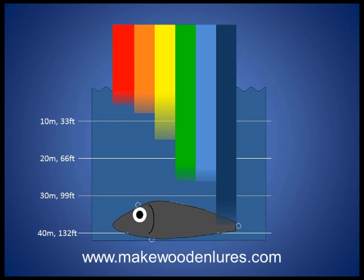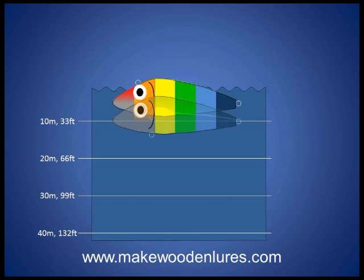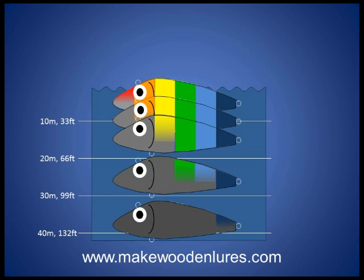At around 37 to 38 metres, even the dark blues disappear, and the lure just appears grey to the fish at that depth — regardless of what colours it's been painted. Looking at all this information together, the same lure at various depths looks very different because many colours have disappeared by the time it gets to great depth. It really doesn't matter what colour you've painted your lure if it's swimming at around that 35 to 40 metre mark — all a fish gets to see is grey.